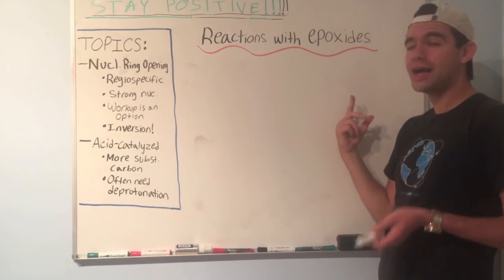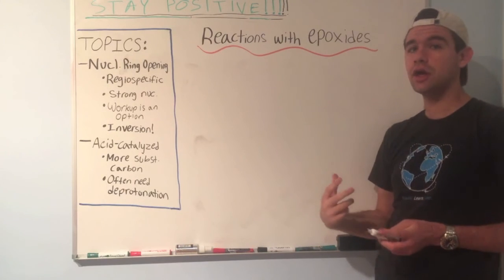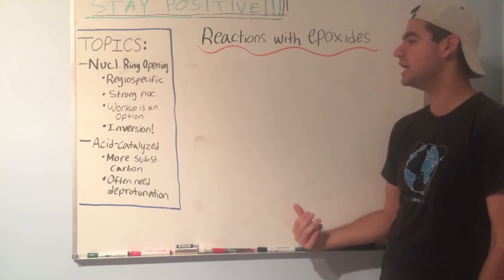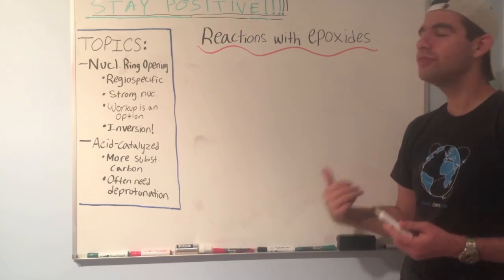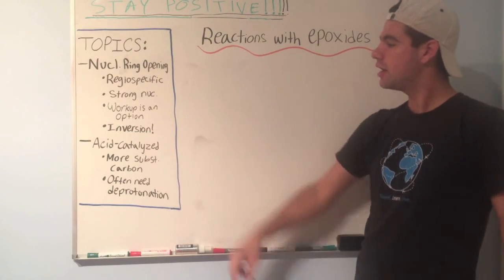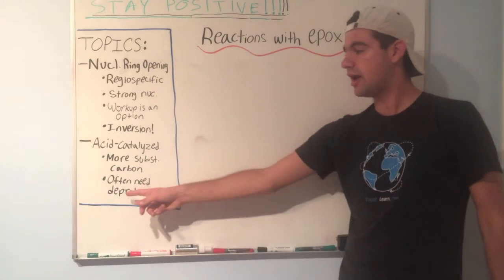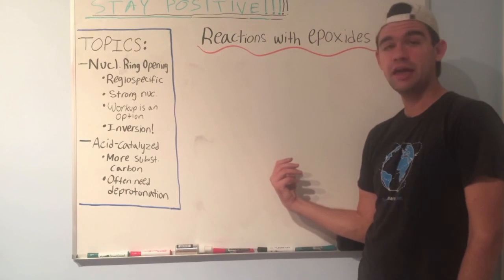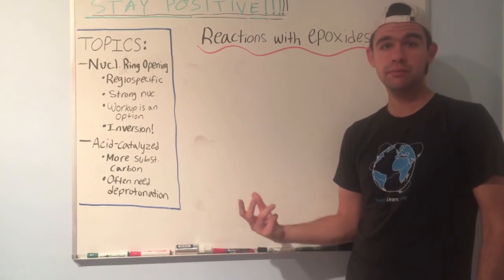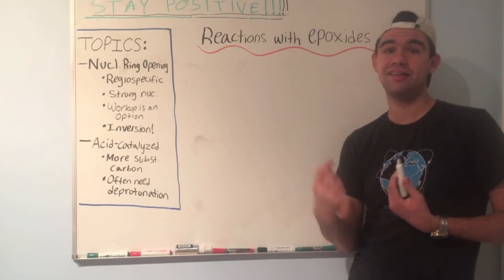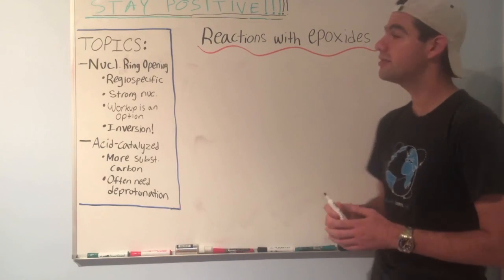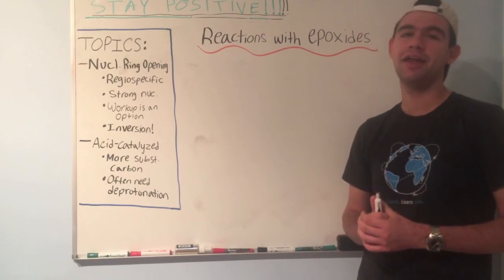That's epoxide reactions in a nutshell. I'll probably make another video with a bunch of practice problems involving epoxides — normally they aren't too tricky. Just remember that when dealing with acid-catalyzed ring opening, you will often have to deprotonate at the end, because the nucleophile is sometimes weak and often has a hydrogen attached that needs to be removed. Thanks so much for watching, and I hope that helped.